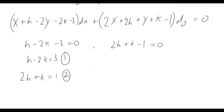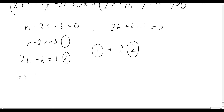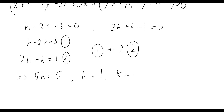Solving the simultaneous equations by taking equation 1 plus 2 times equation 2, we get 5h = 5, so h = 1, and substituting back gives k = -1.